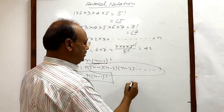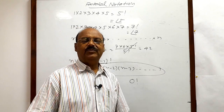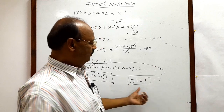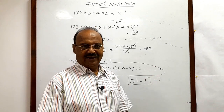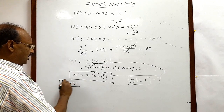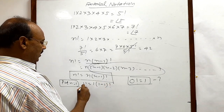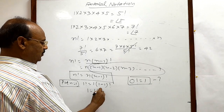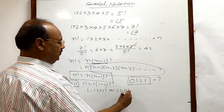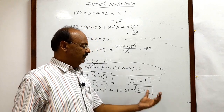Let us try to understand what is the value of 0!. This is very surprising because 0! will not have any natural numbers — so how can we evaluate it? You will be surprised to know that 0! = 1. Using the formula n! = n × (n−1)!, let us put n = 1. On the left-hand side we get 1!, and on the right-hand side we get 1 × 0!. Since 1! = 1, we get 1 = 0!. Therefore 0! = 1. This is a very interesting result — we must remember that 0! = 1.